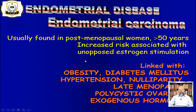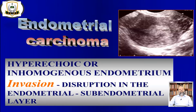Another endometrial disease is endometrial carcinoma, usually found in postmenopausal women above 50 years of age. Increased risk is associated with unopposed estrogen stimulation, and it is linked with obesity, diabetes mellitus, hypertension, nulliparity, late menopause, polycystic ovaries, or disturbed hormones. On ultrasound, endometrial carcinoma will appear as a hyperechoic or inhomogeneous endometrium. The outline is irregular and disturbed because of invasion of the carcinoma into the walls, with disruption of the endometrial and sub-endometrial layers.